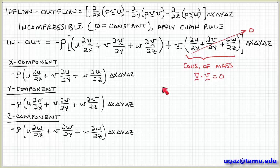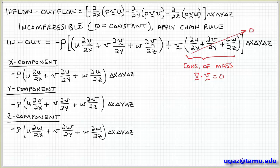This collection of terms, either in vector form or in terms of individual components, represents the contribution to the momentum balance due to inflow and outflow of momentum into the control volume. Now we have just about everything we need to complete the momentum balance — the sum of the forces and the expression for inflow and outflow. We just need to put it all together into Newton's second law to get the conservation of momentum expression.